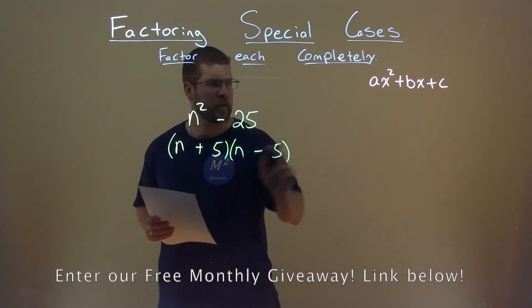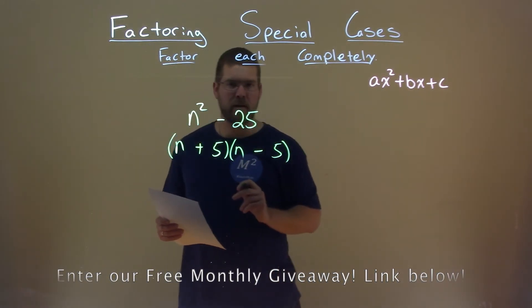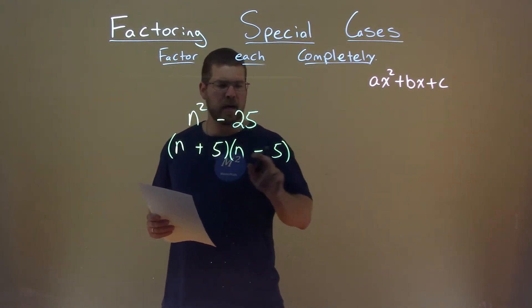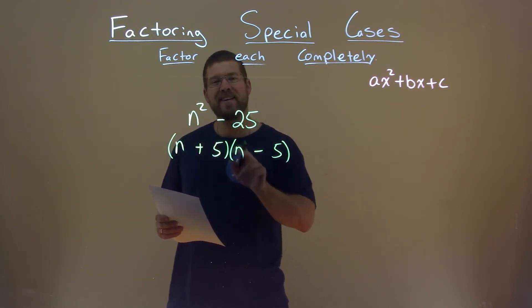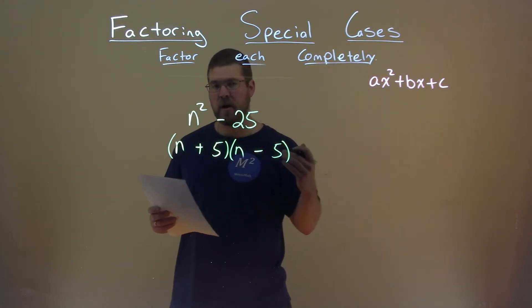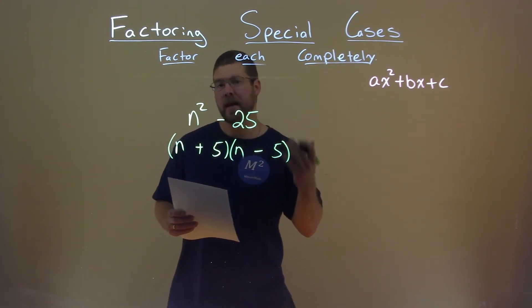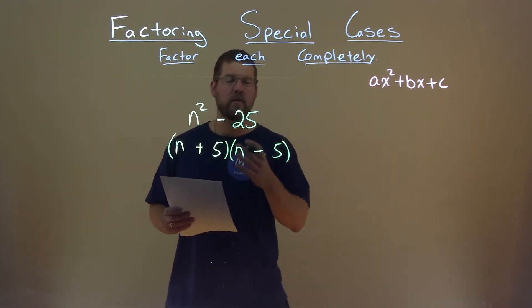But here's the trick. Our b value is 0, not written right here. n times negative 5 is negative 5n. 5 times n is positive 5n. They cancel each other out when we add them. 5n plus negative 5n is 0. Don't need to write that.